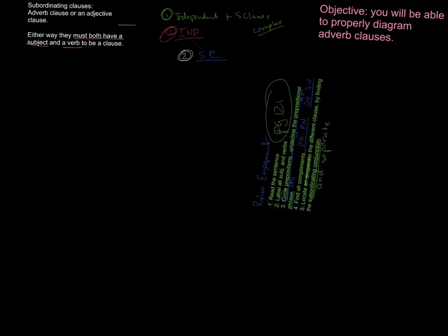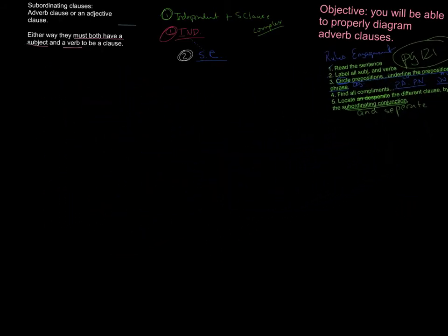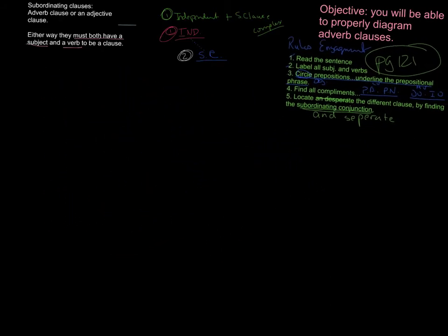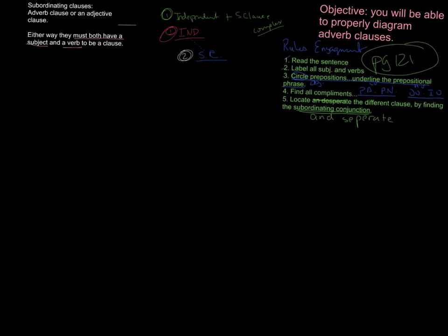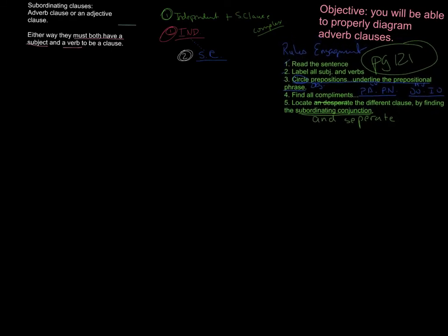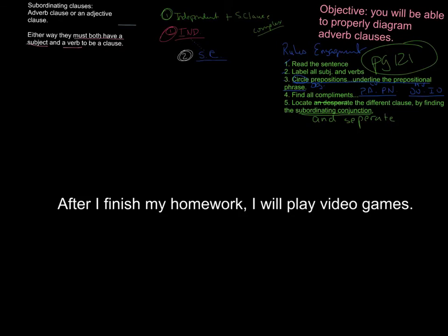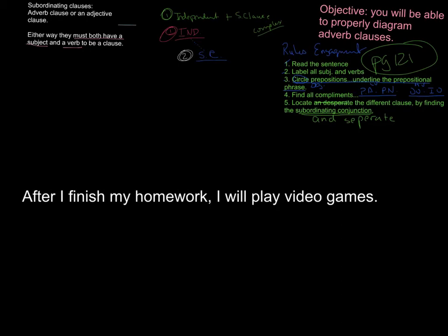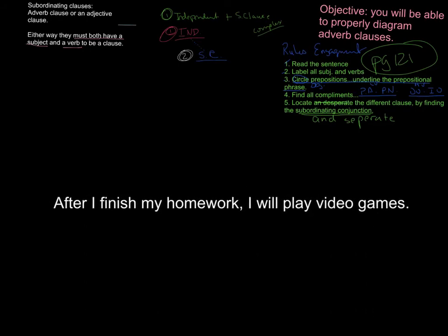So let's go ahead with our sentence: 'After I finish my homework, I will play video games.' The first thing we do after reading the sentence is label all the subjects and verbs. In the first part, 'I' is the subject and 'finish' is the verb — I did the finishing. In the second part, 'I' is also the subject, and 'will play' — helping verb and main verb together — forms the verb phrase.